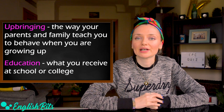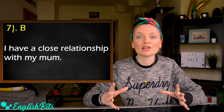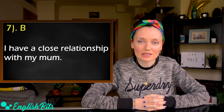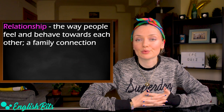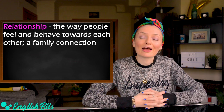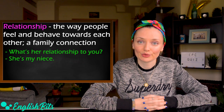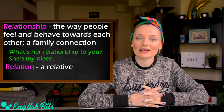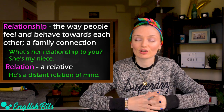Number seven — the correct answer is B: relationship. I have a close relationship with my mom. Relationship means the way people feel and behave towards each other, and it can also mean a family connection — for example, 'What's her relationship to you? She's my niece.' While 'relation' means a relative — for example, 'He's a distant relation of mine.'